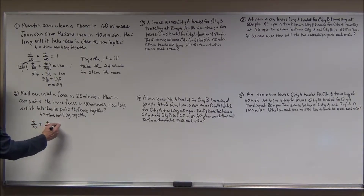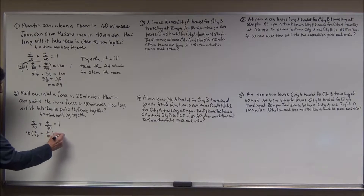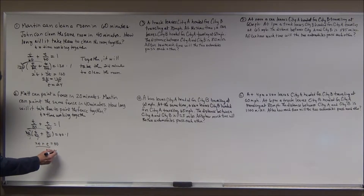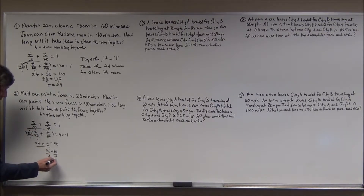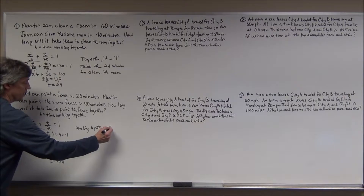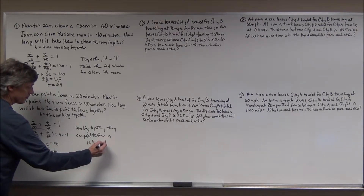The two people working together will get one job done. So I'm going to multiply by my LCD, which is 40 this time. So 40 times the left side and 40 times the right side gives me — distributing — 40 goes into 20 twice, so that's 2T, plus 40 goes into 40 once, so that's T, equal to 40. Combining like terms: 3T equals 40. Divide both sides by 3: T equals 40/3. But since it's a story problem, you don't want to write your answer as an improper fraction — change it to a mixed number. This goes in 13 times with one left over. So working together, they can paint the fence in 13 and 1/3 minutes. Don't forget your units.